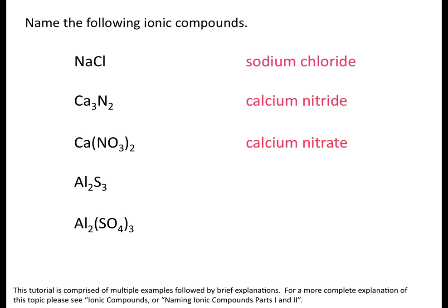Take a second to look at the difference between the second and third examples: nitrate and nitride. Nitrate is the name of a polyatomic ion, so you would need to see the NO3 group in your formula. Nitride means you have a nitrogen ion, and that's why the ending was changed to -ide.